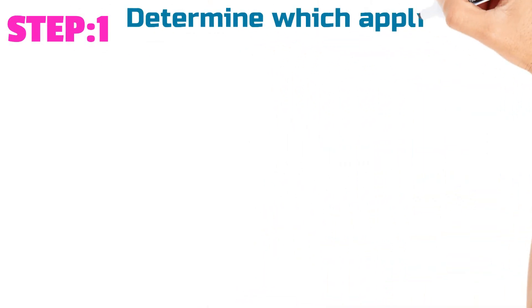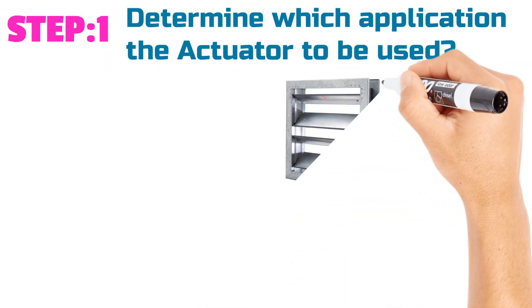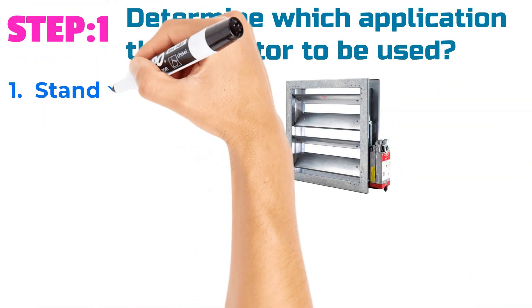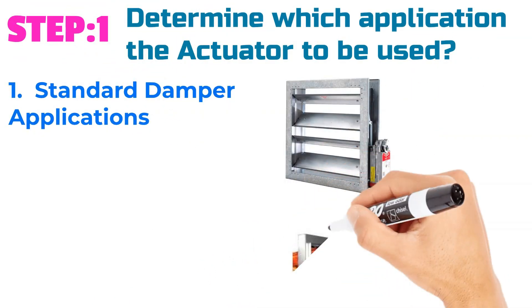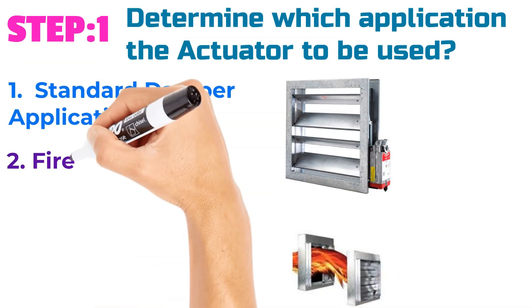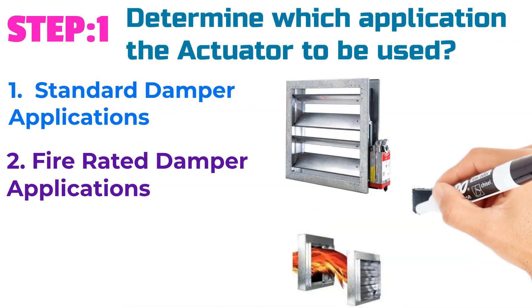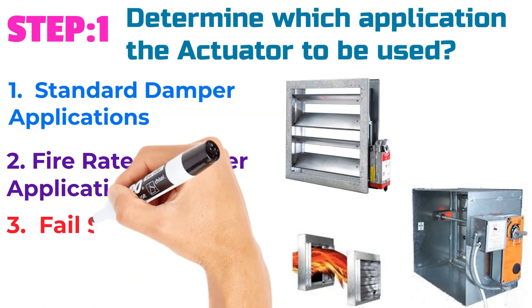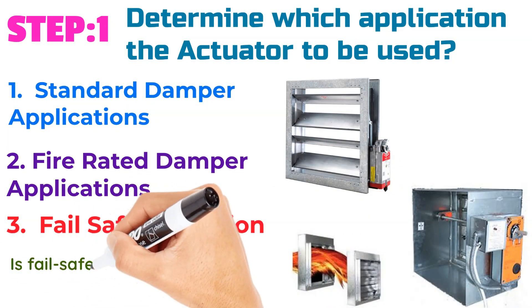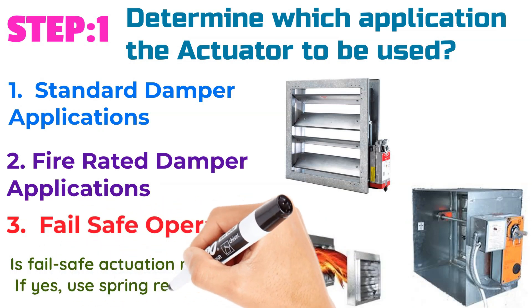Step number one: Determine which application the actuator is to be used in. One — standard damper applications. Two — fire rated damper applications. Three — fail-safe operation. Is fail-safe actuation required? If yes, use a spring return actuator.